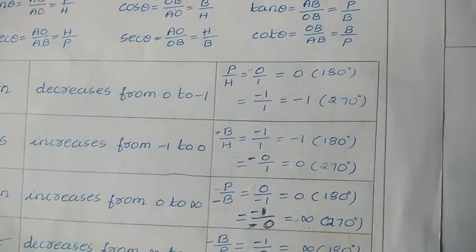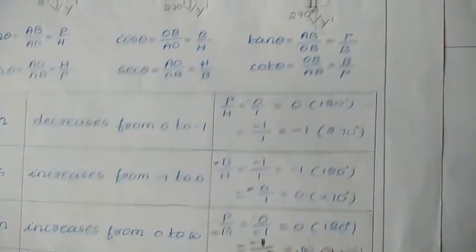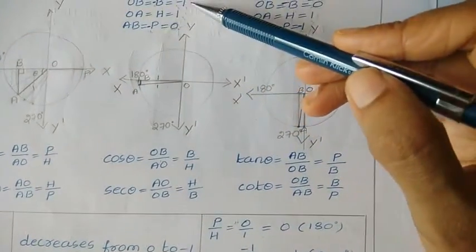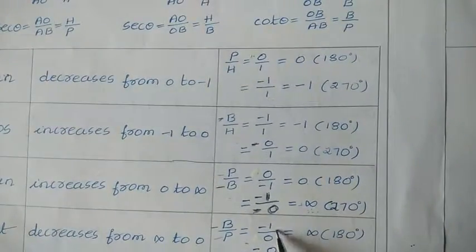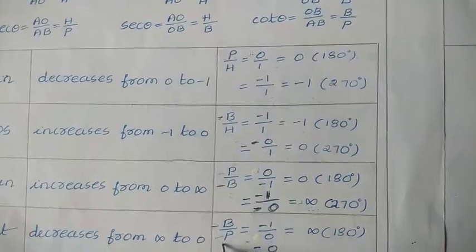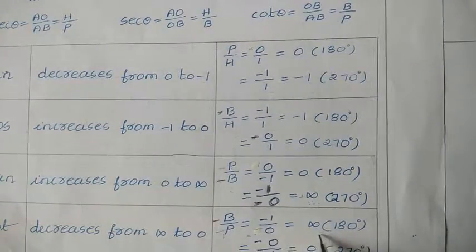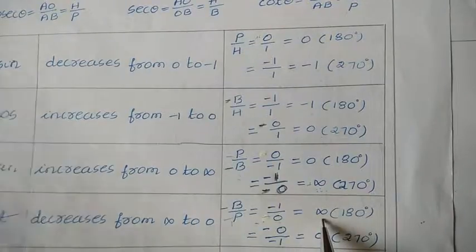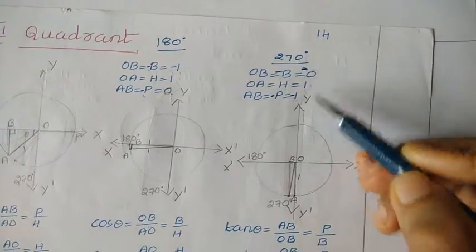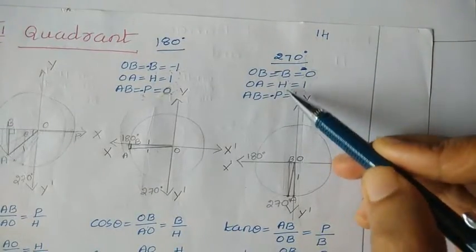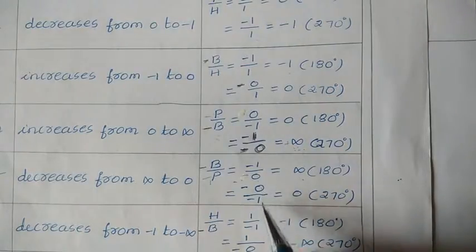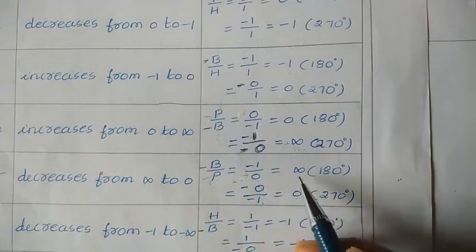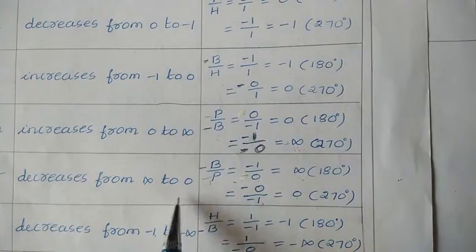Next, cot is base upon perpendicular. At 180 degrees, base is 1 and perpendicular is 0. Since both base and perpendicular are negative, minus divided by minus becomes plus infinity. For 270 degrees, base is 0 and perpendicular is 1, so 0 upon 1 equals 0. So cot value decreases from plus infinity to 0.